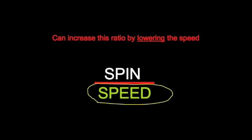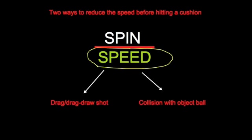The other way to increase a ratio is by decreasing the denominator. If I offer you a salary of $2,000 per month you're probably not impressed, but if I change that to $2,000 per week, I've got your attention. Likewise, if we can reduce the speed without reducing the spin, we can get more action off the rail. There are two ways to do that: one is to hit a drag or drag-draw shot, where you hit the cue ball low and the backspin rubs off on the way to the object ball, slowing the cue ball without reducing spin. The other is that the collision with the object ball itself takes away speed without taking away spin.